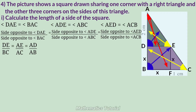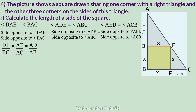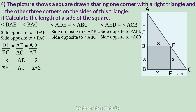DE is a side of the square, so DE = x. From the figure, BC = x + 1, AD = 2 cm, and AB = x + 2. So x/(x+1) = 2/(x+2).